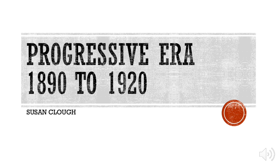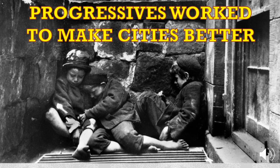The Progressive Era begins in the year 1890 and ends in 1920. The Progressive Era incorporates a period of national activism as the Progressives, as they called themselves, worked to make American cities a better and safer place to live. Progressives worked to combat crime, corruption, disease, poverty, food sanitation, and working conditions, among other things.